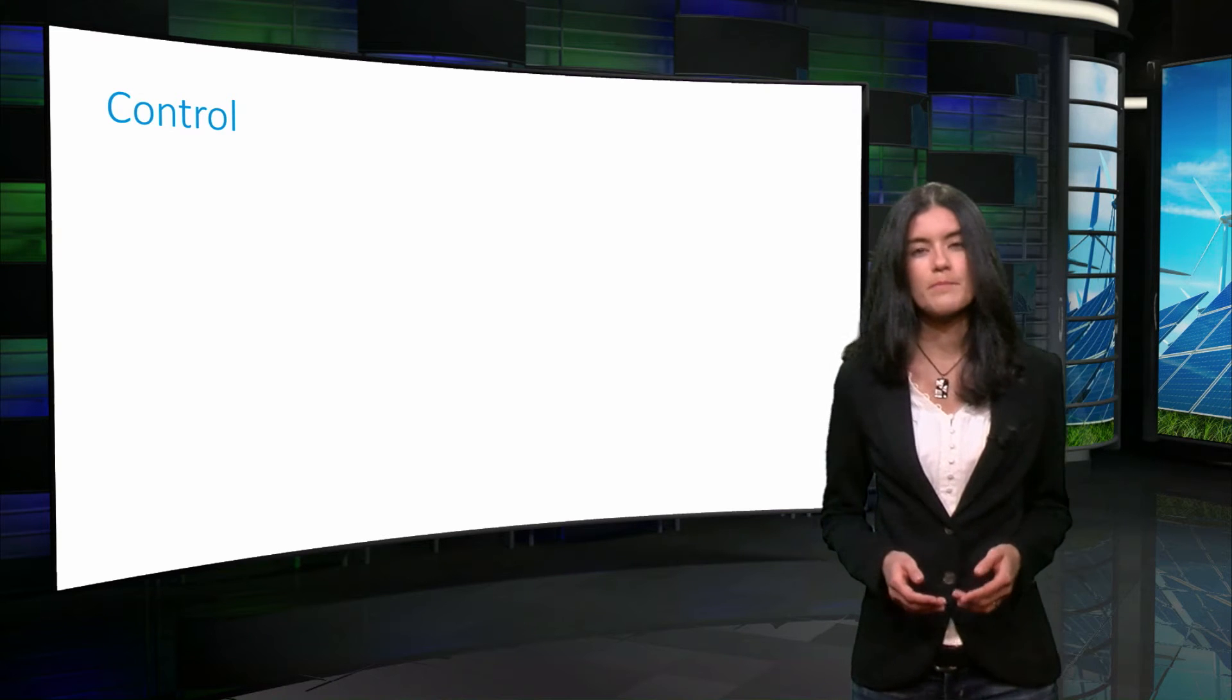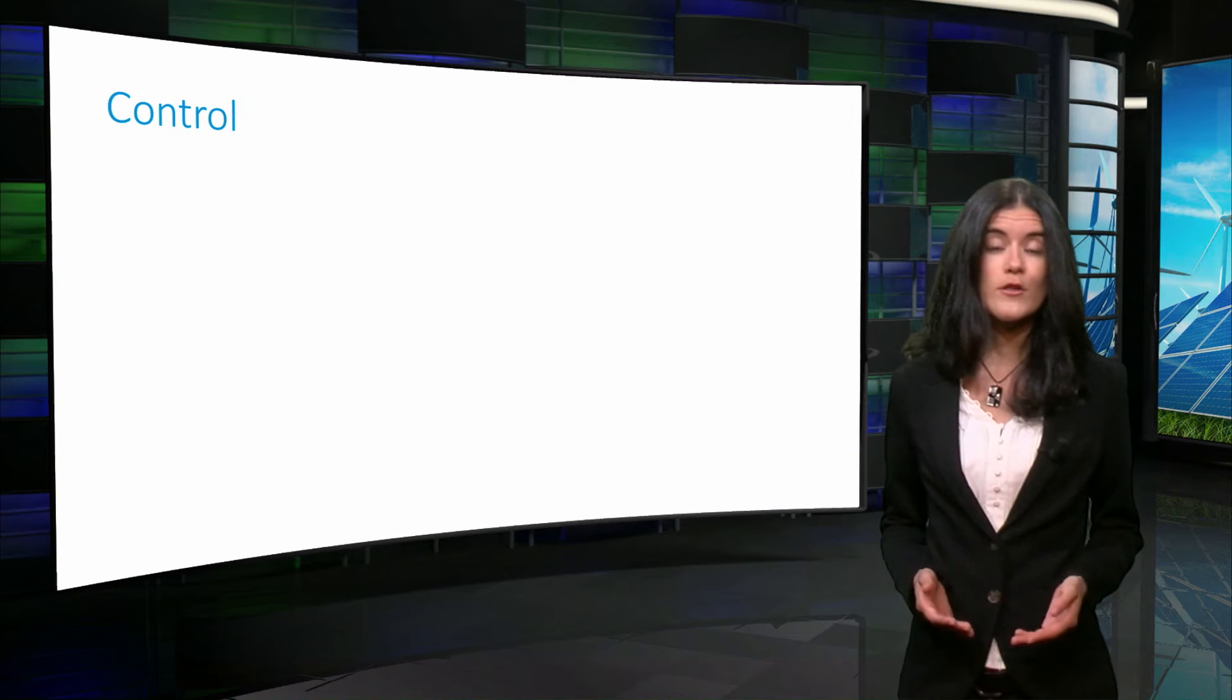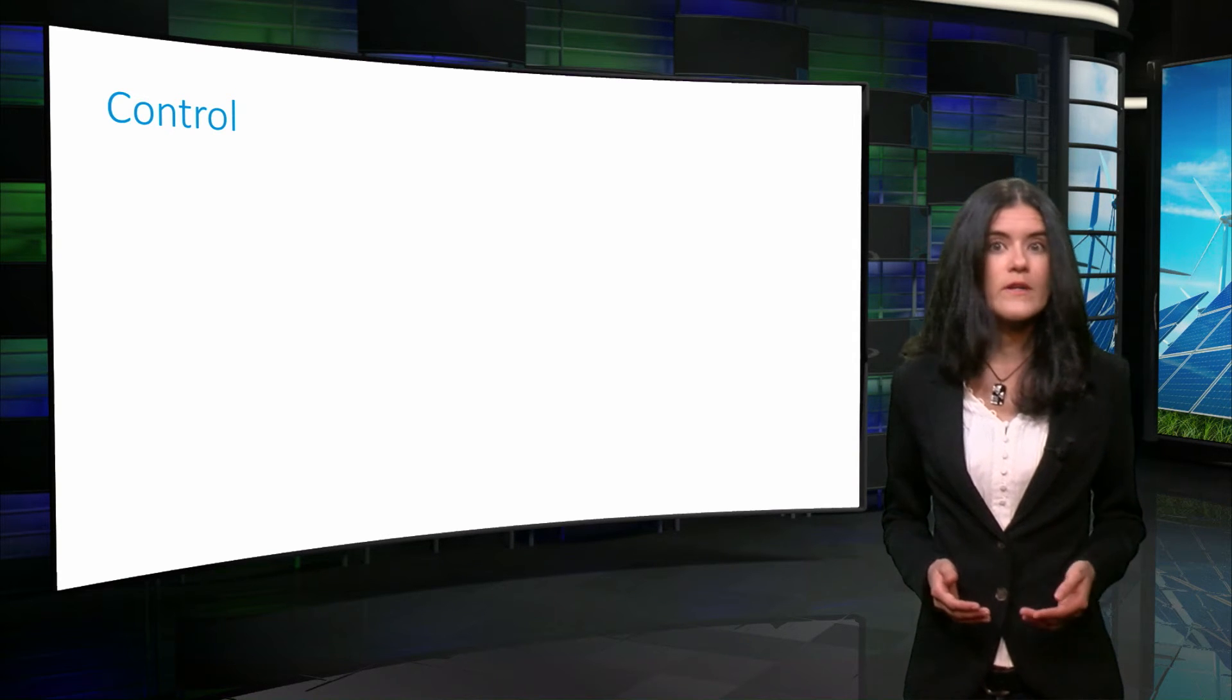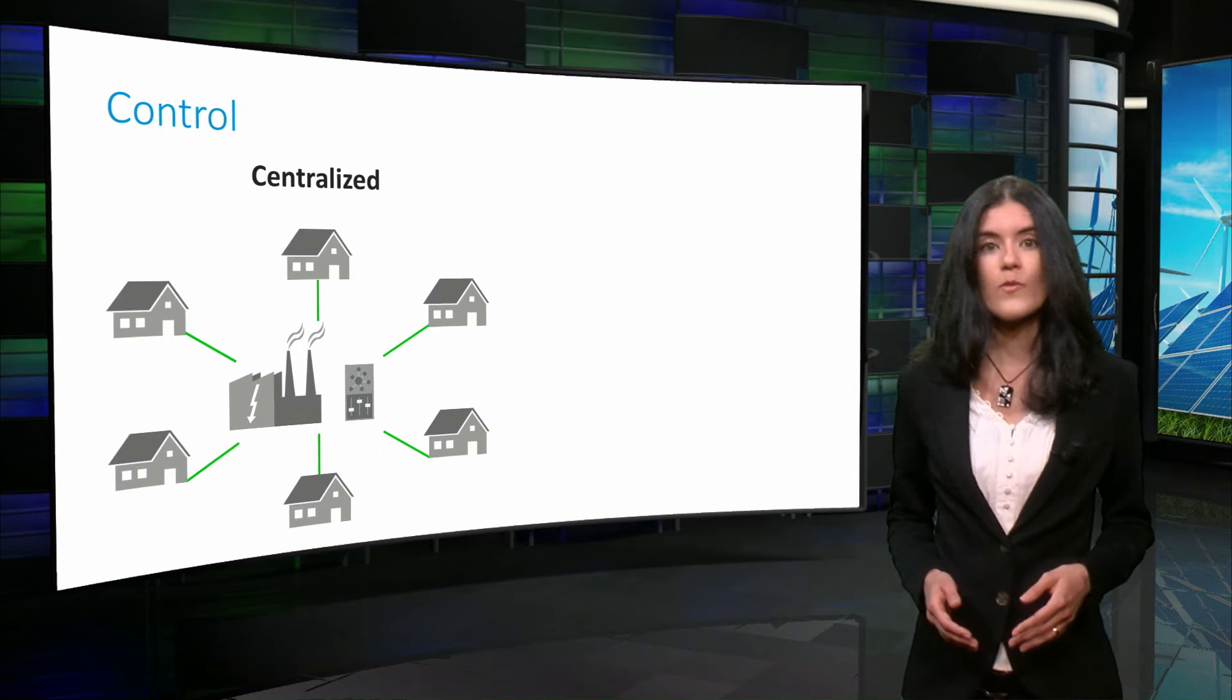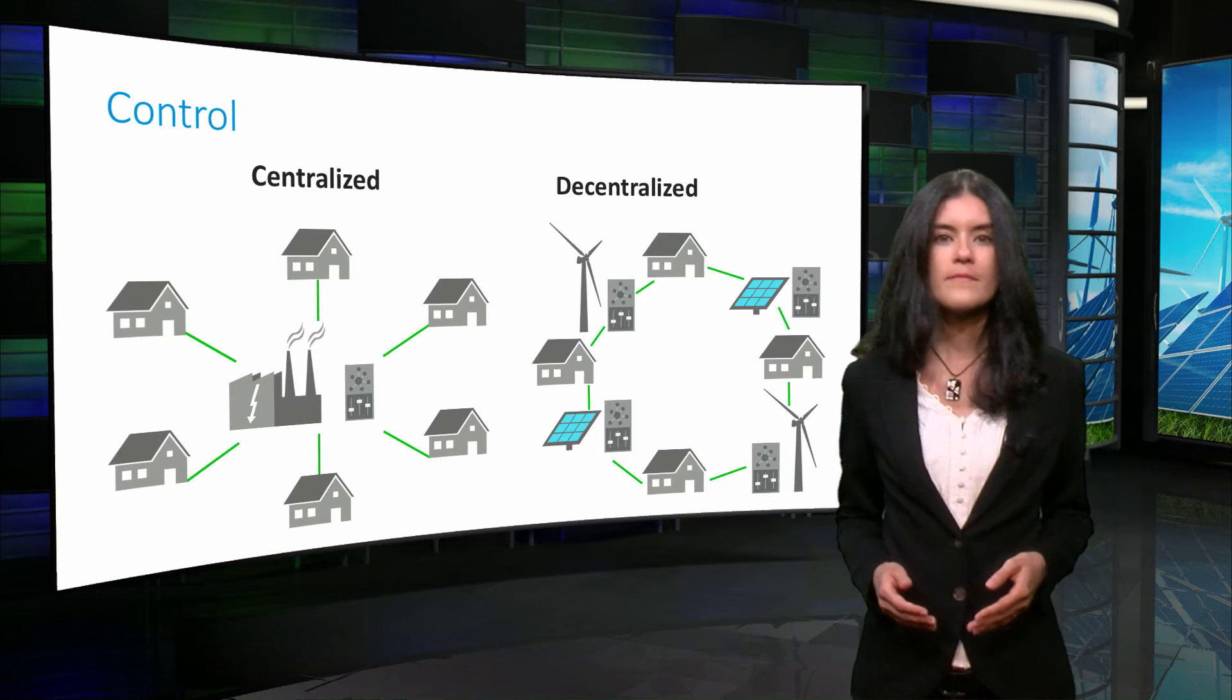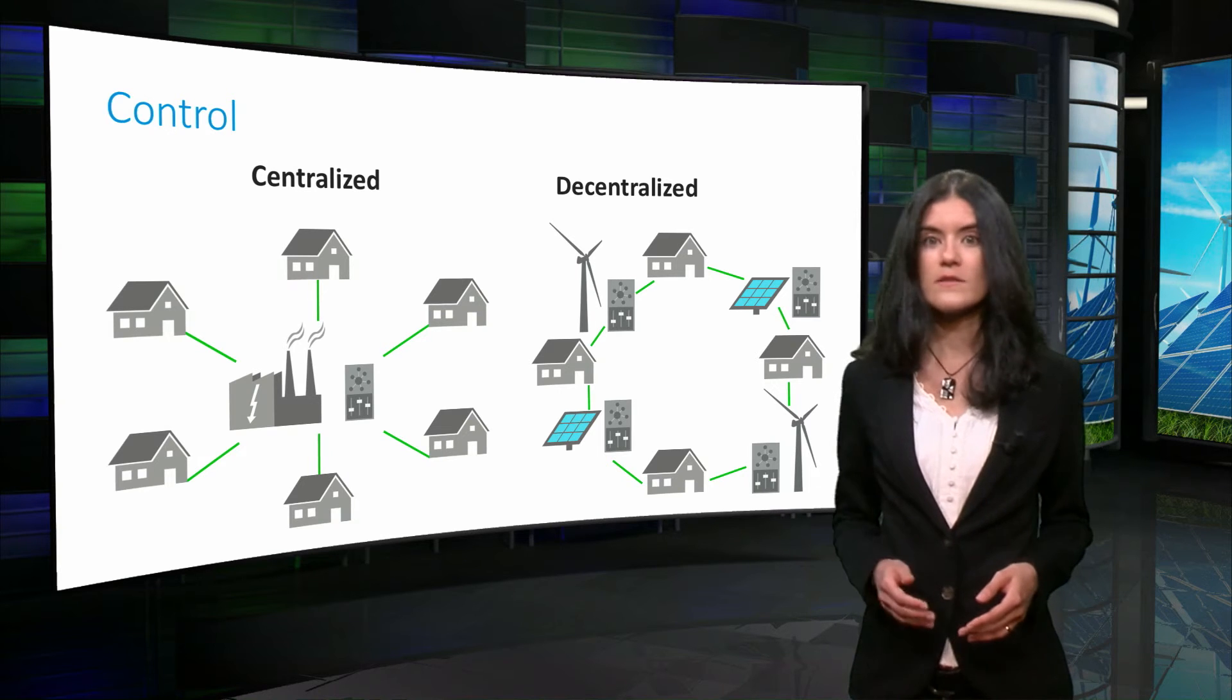In traditional power systems, primary control is performed locally at the generation unit. On the other hand, secondary and tertiary control are applied in a centralized way. However, this is likely to change in the future. Let's have a look at the difference between centralized and decentralized control.